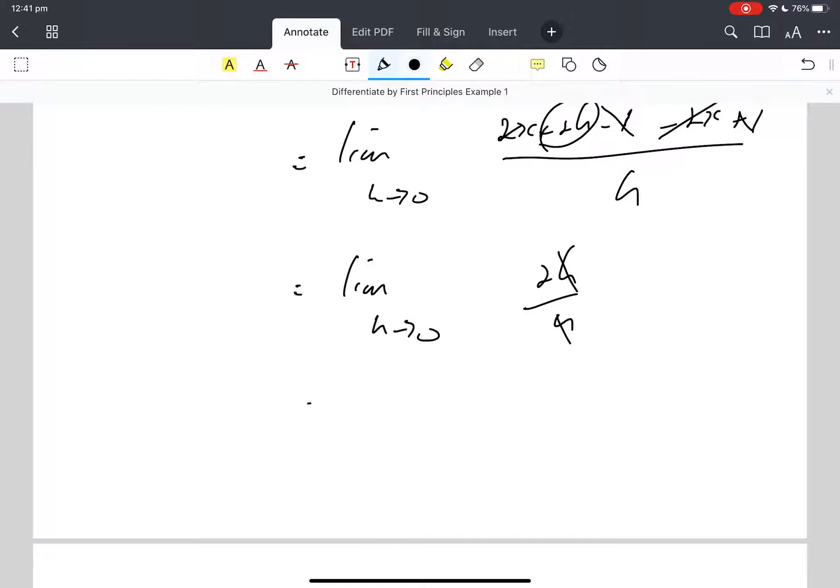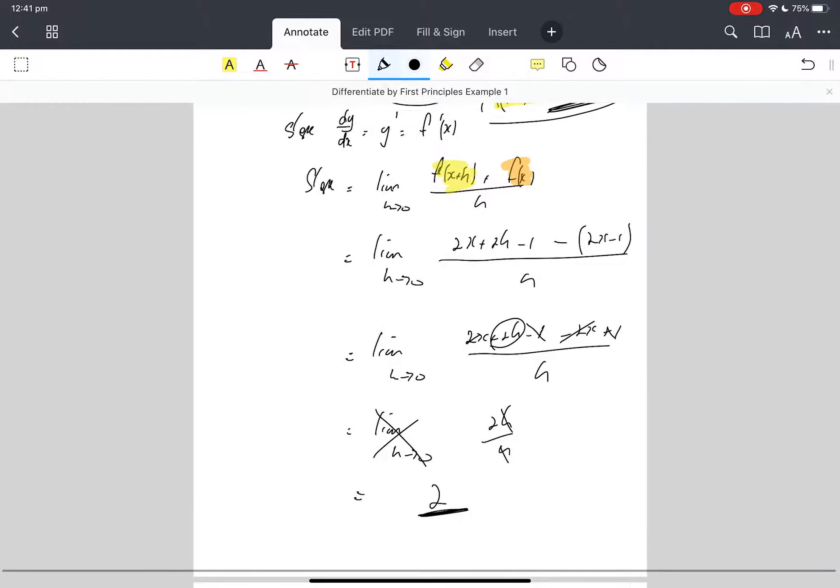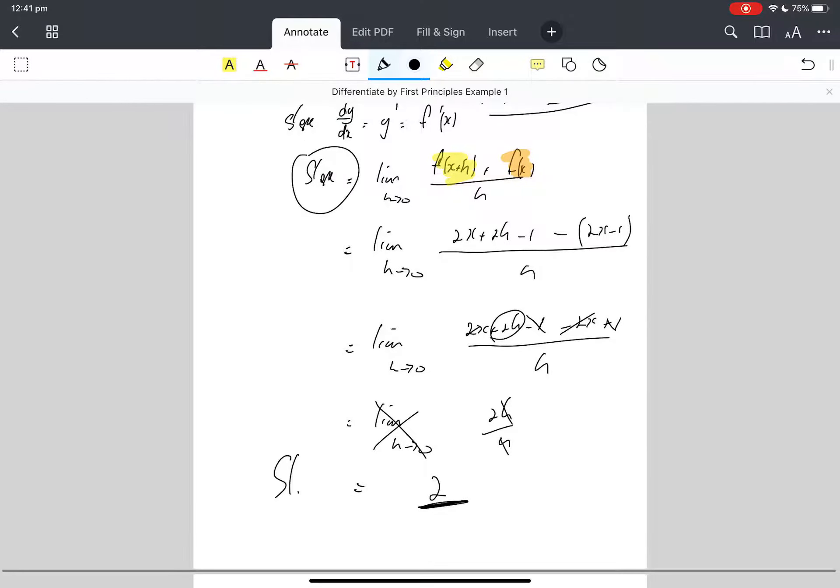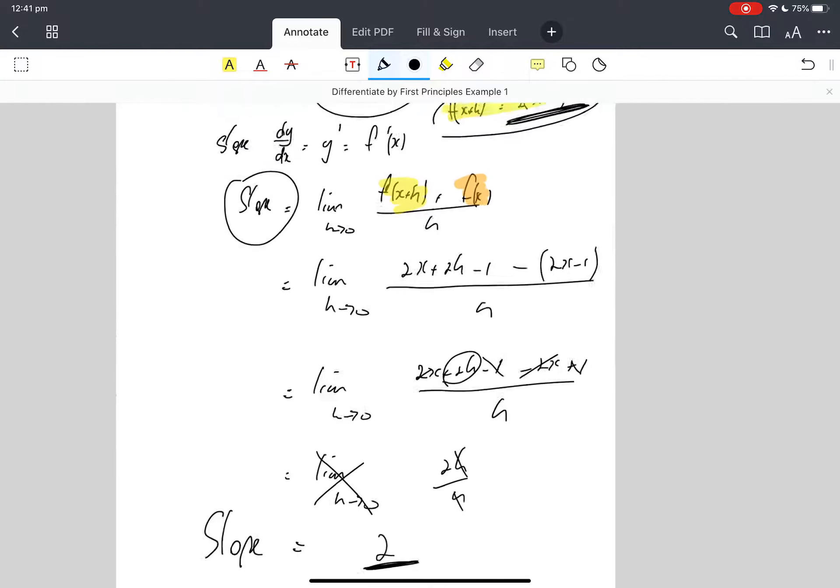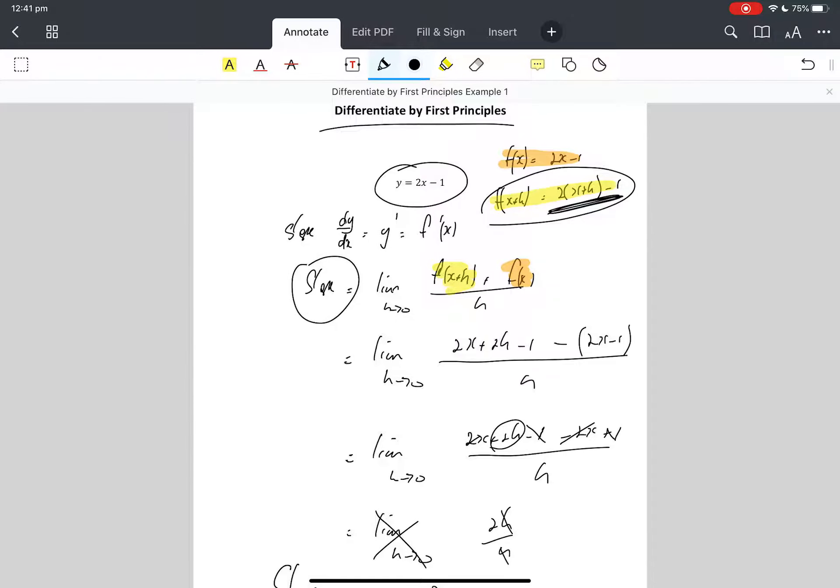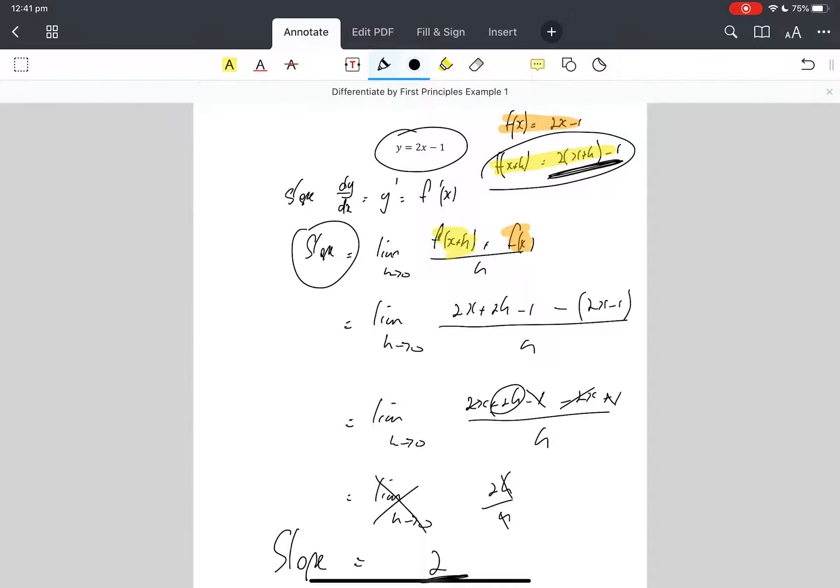So it's 2h over h. Oh my gosh, the h's cancel. Because there's just a 2 left, I don't need to write that. So on the left-hand side, I've got slope equals 2. Hey, we knew that, but that's how the application of the rule works.